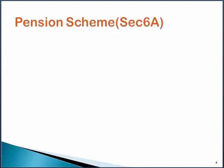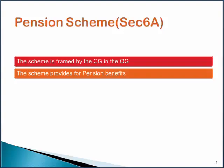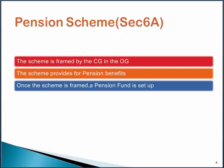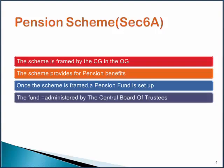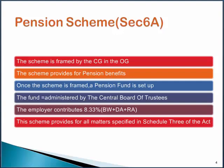Let's consider an out and out theory question on the Pension Scheme. The entire answer would be completed in six simple points. The scheme should be framed by the central government in the Official Gazette. The scheme should provide for pension benefits. Once the scheme is framed, the employer should set up a pension fund. This fund should be administered by the Central Board of Trustees. The employer will contribute 8.3% of Basic Wages, Dearness Allowance, and Retaining Allowance. The scheme should provide for all the matters specified in Schedule 3 of the Act.